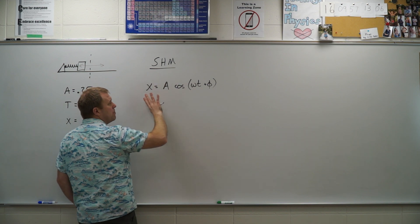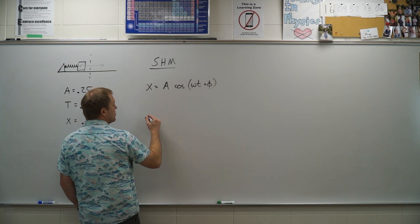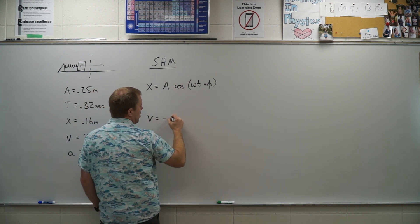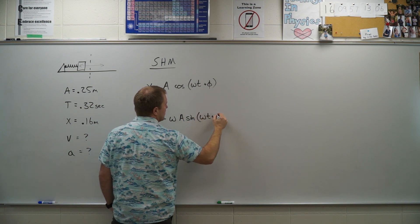So since it's simple harmonic motion, our position function we can use is this. To get a velocity function, I just need to take the derivative. So I get negative omega times A sine omega t plus phi.